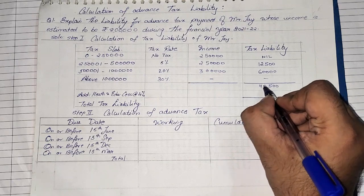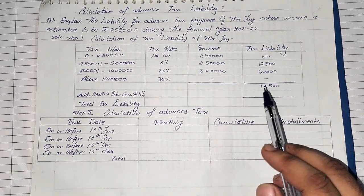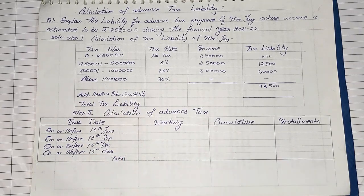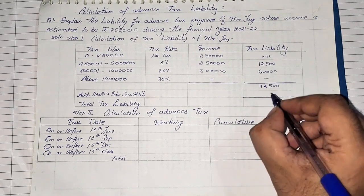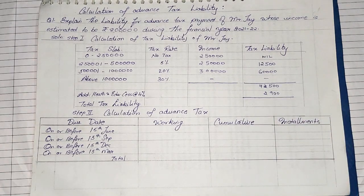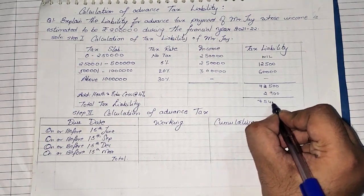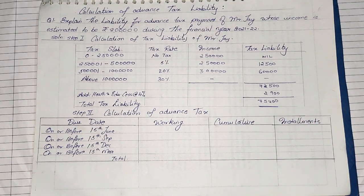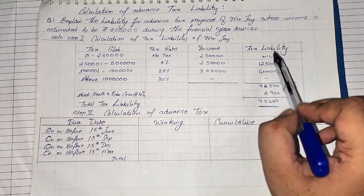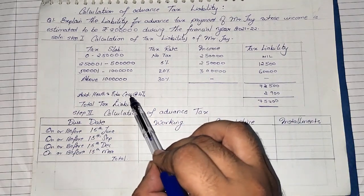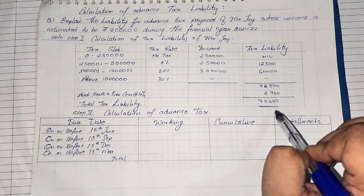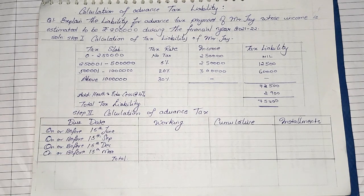On the gross tax liability of 72,500 we add 4% for health and education cess, which comes to 2,900 rupees. Adding that to 72,500 gives a total tax liability of 75,400 rupees. So Mr. J's total tax liability is 75,400. That completes step one — break the income into slabs, apply the rates, total it up, and add 4% cess.